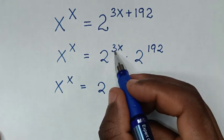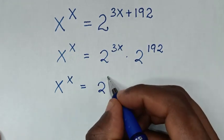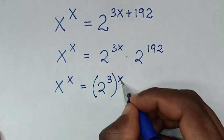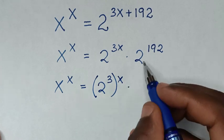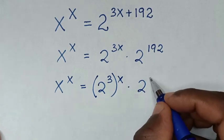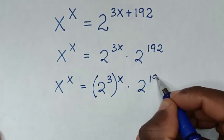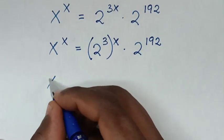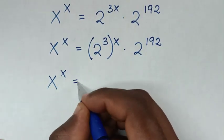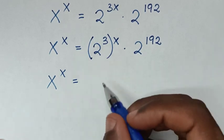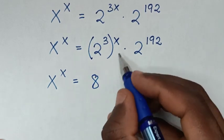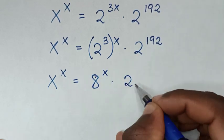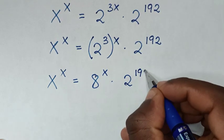We take the power of 3 inside the bracket, so it will be 2 power of 3, then bracket power of x outside the bracket, then times this exponent 2 power of 192. Then it will be x power of x is equal to 2 power of 3, which is 8, then power of x, then times this exponent 2 power of 192.